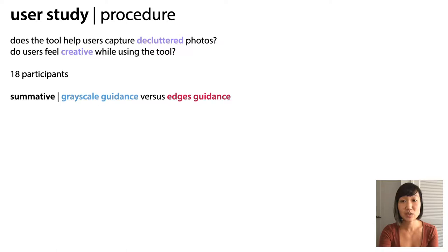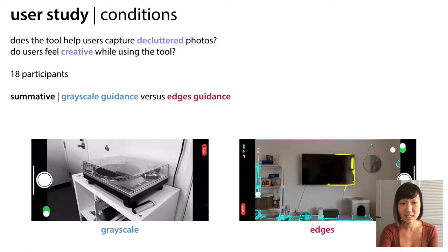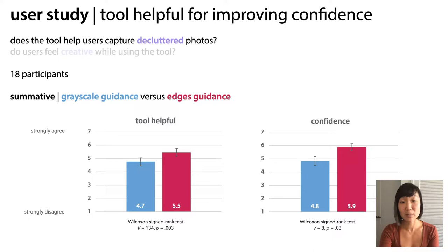We ran remote studies over Zoom with 18 participants to understand if the tool would help users declutter photos, and if they felt creative while using the tool. Users experienced two different conditions: one with the grayscale overlay, and a second highlighting the edges along with subject and image borders. For each photo, we asked participants to self-assess them based on subject-background separation and image-border flicker. We actually did not see a significant improvement in overall quality in terms of these principles.